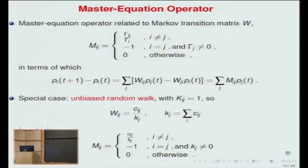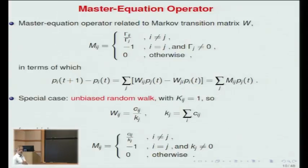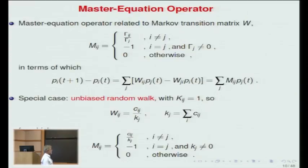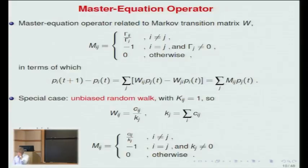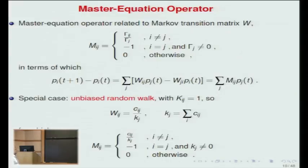You can write down a master equation operator by subtracting a 1 from the diagonal, writing this difference equation which in the limit, if you go to rates, gives the continuous time master equation if you scale the weights with time properly. Here's a special case: if all weights are 1, then my transition matrix is basically I can go from j to i with probability c_ij over k_j, where k_j is the degree of the originating vertex j. So basically I decide with equal probability which of the neighboring vertices I visit at each step.